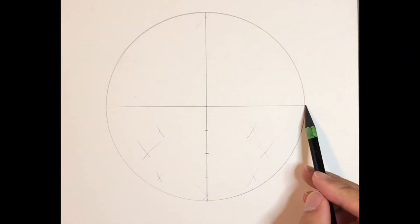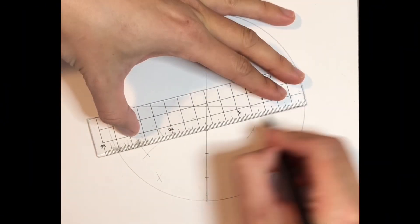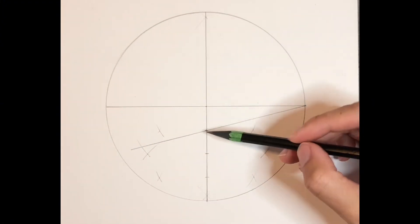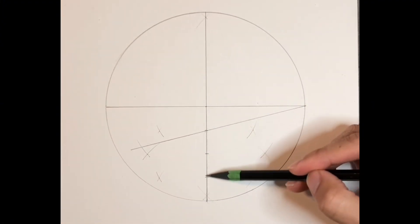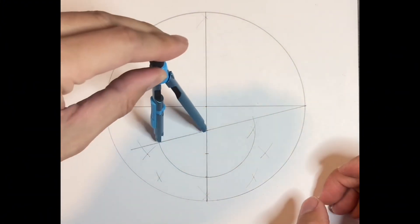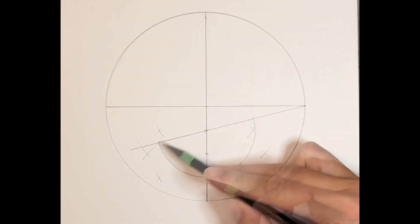Now we're going to draw a line from this point through this point. We're going to draw a semicircle with radius from here to here. Now we're going to connect this to this and this to this.